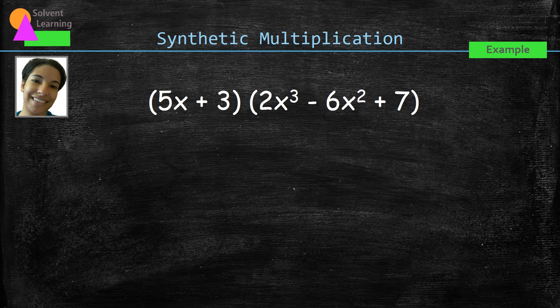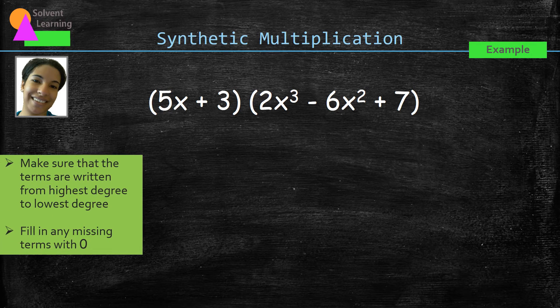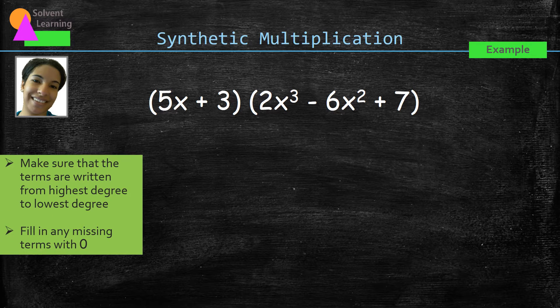Here's an example of multiplying two polynomials together. We have a binomial in the first set of parentheses and trinomial in the second set of parentheses. Before we set it up for synthetic multiplication, we need to make sure that the terms are written from highest degree to lowest degree for each polynomial. So looking at the binomial there,